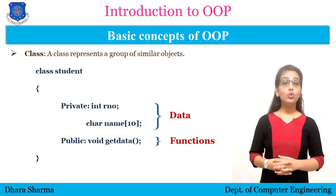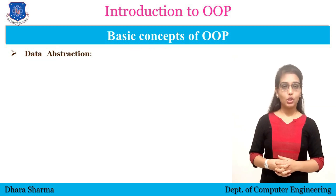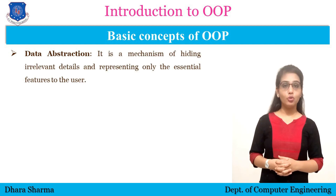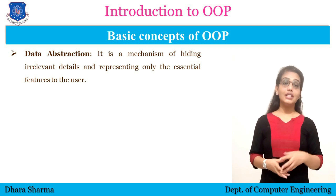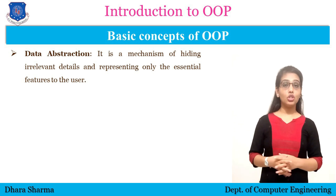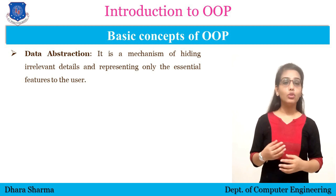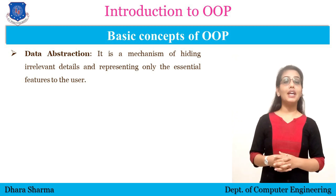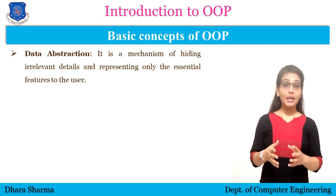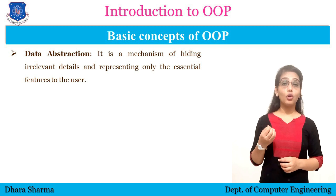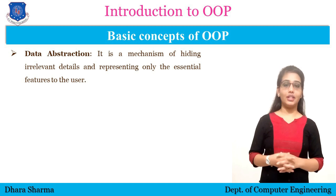Now moving towards the next concept, which is data abstraction. Data abstraction means hiding the implementation details from the user, or hiding the essential features from the user. As we have seen in C programming language or any procedure-oriented programming language, the data is by default public, which means the data can freely move around the program and can be accessed anywhere in the program.